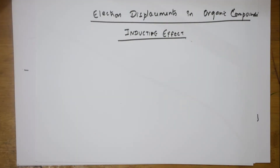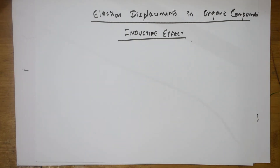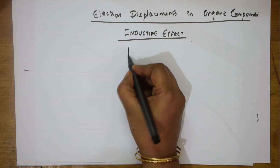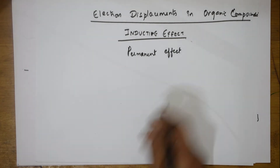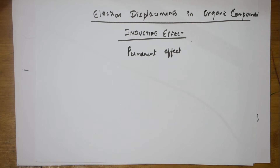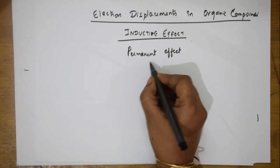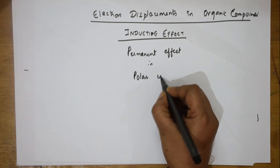Let's learn the important concepts of GOC — the first important topic is the inductive effect. I'll be giving different examples on how to determine increasing or decreasing order of acidic strength, basic strength, and carbocation stability based on the inductive effect. The first important thing to remember is that the inductive effect is a permanent effect, and it operates only in polar covalent bonds.